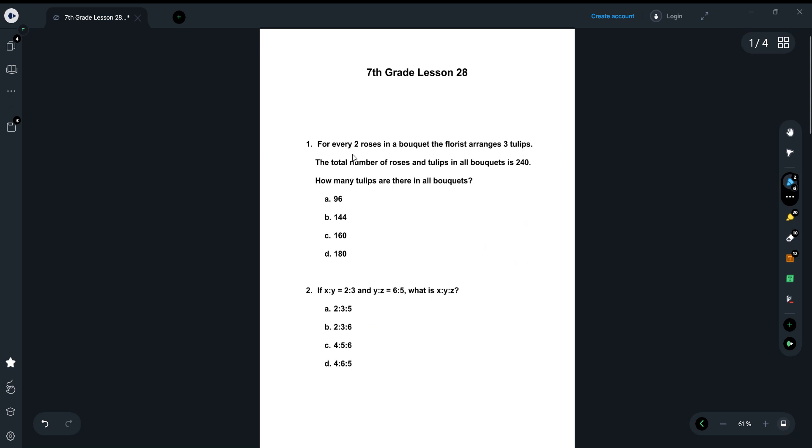The first question is asking, for every two roses in a bouquet, the florist arranges three tulips. The total number of roses and tulips in all bouquets is 240. So in this problem, it's asking how many tulips are in all bouquets.